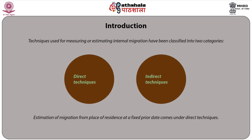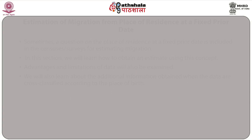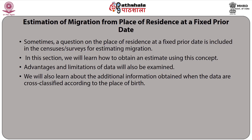Techniques used for measuring or estimating internal migration have been classified into two categories: first, direct techniques, and second, indirect techniques. Estimation of migration from place of residence at a fixed prior date comes under direct techniques. Sometimes a question on the place of residence at a fixed prior date is included in censuses or surveys for estimating migration.